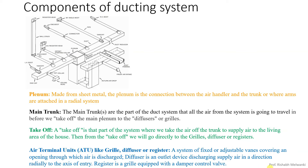A diffuser is an outlet device discharging supply air in a direction radially to the axis of entry. There are different types of diffusers. A grill is equipped with a damper for airflow control. In a register you can change the direction of air, whereas in a grill you will have a fixed type of vane. So we have grill, then diffuser, and then register.